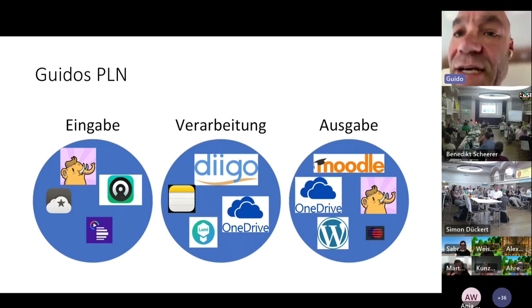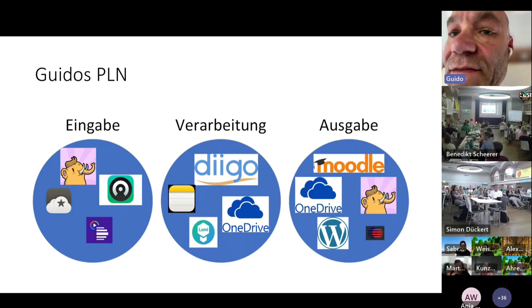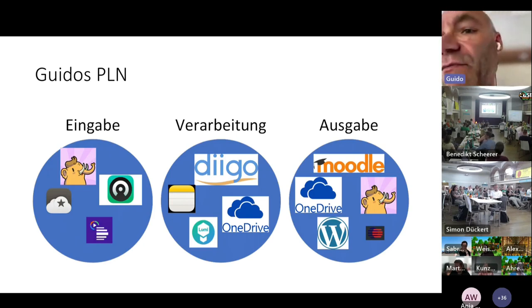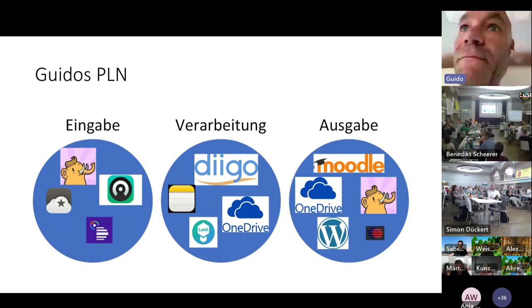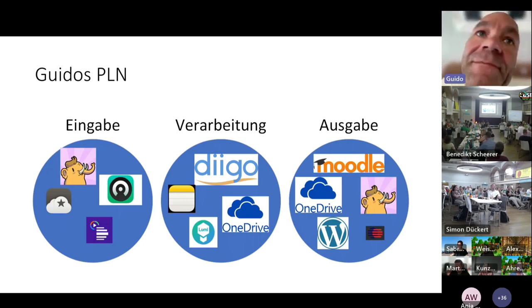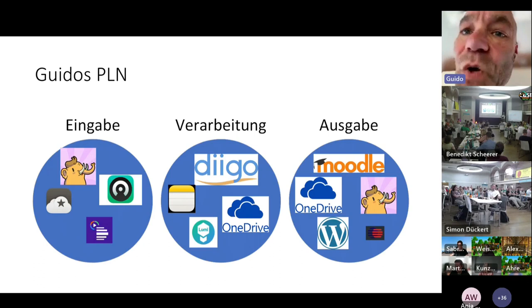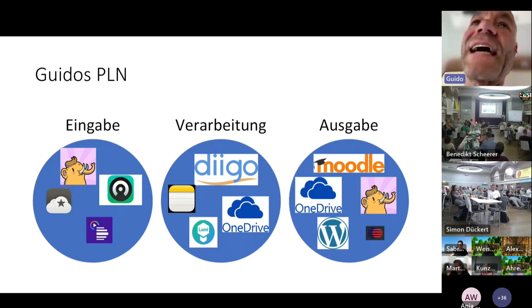If you search for PLEs online you'll find many images with no fixed structure — some people use drawers, others use the input-process-output principle. Input-process-output can help you talk about the corresponding tools. You receive things via a podcast or apps, process them — for instance with Diigo for notes, or OneDrive — and the output can be via Moodle, a blog, Mastodon, or your website.